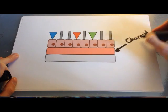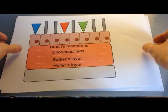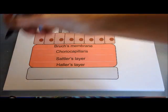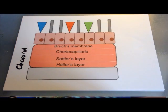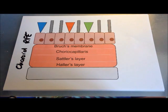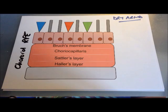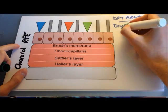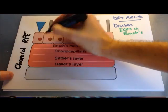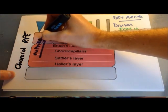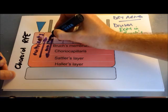Zooming in on the choroid, we can see it is separated into different layers: Haller's layer contains the larger blood vessels, Sattler's layer has slightly smaller vessels, and the choriocapillaris is the capillary layer. Bruch's membrane is a membrane that separates the choroid from the retinal pigment epithelium. Normally Bruch's membrane monitors what goes in and out of the retinal pigment epithelium — allowing nutrients in and waste back across into the blood vessels of the choroid.